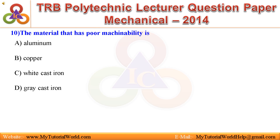Question 10: The material that has poor machinability is. A. Aluminum. B. Copper. C. White cast iron. D. Gray cast iron. Answer is: White cast iron.